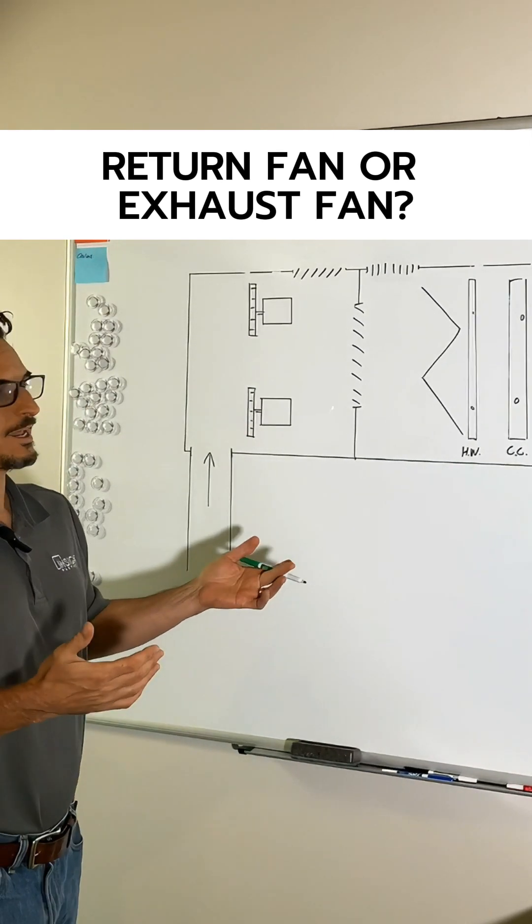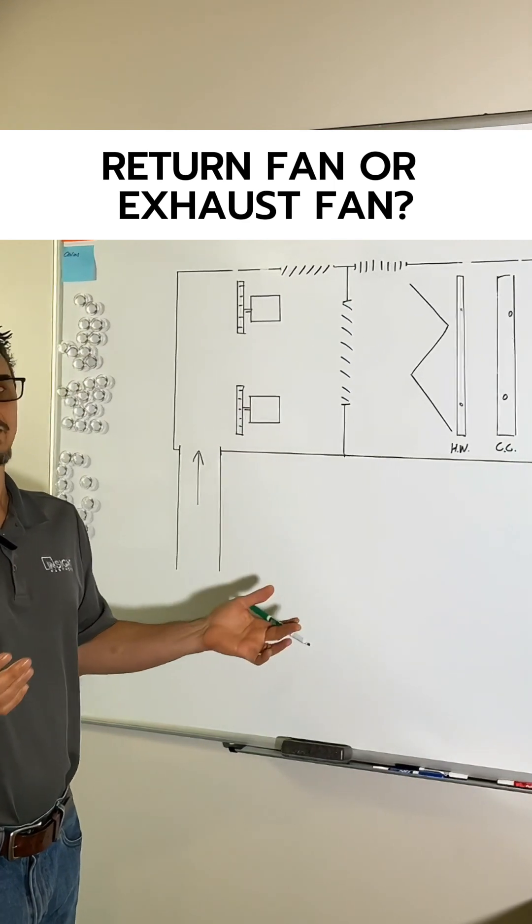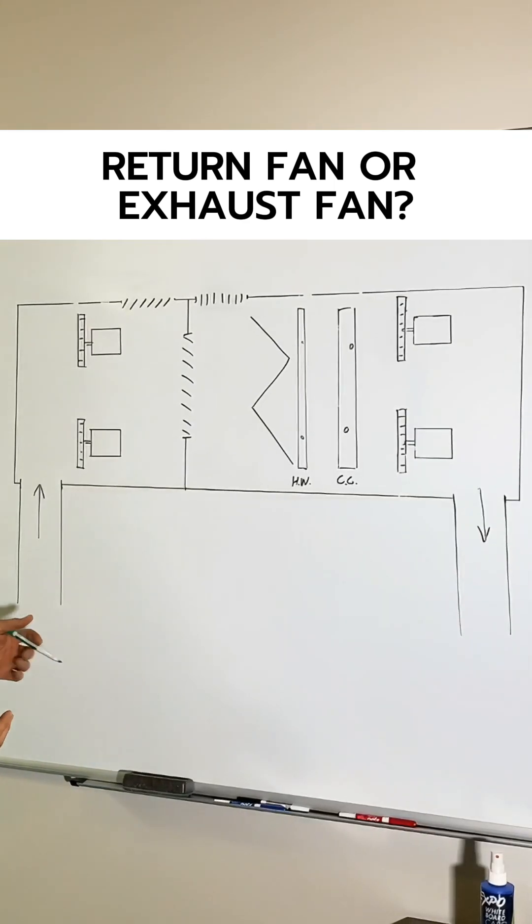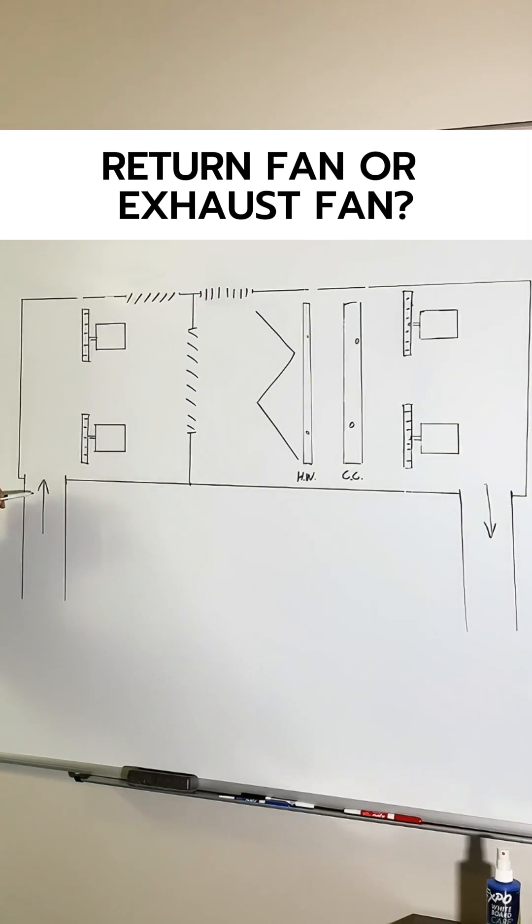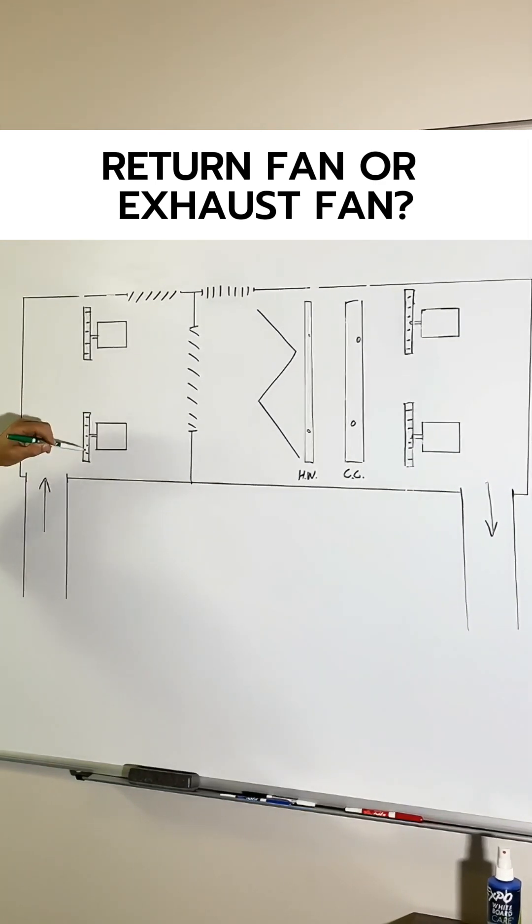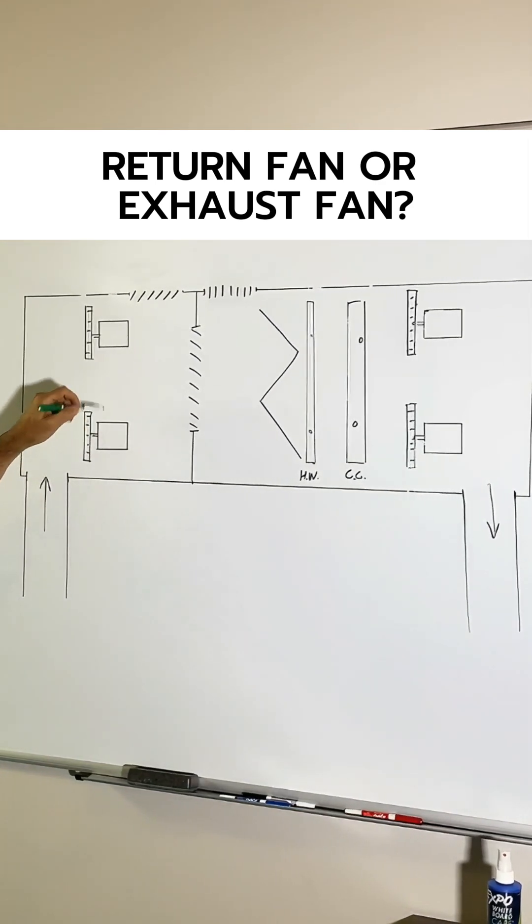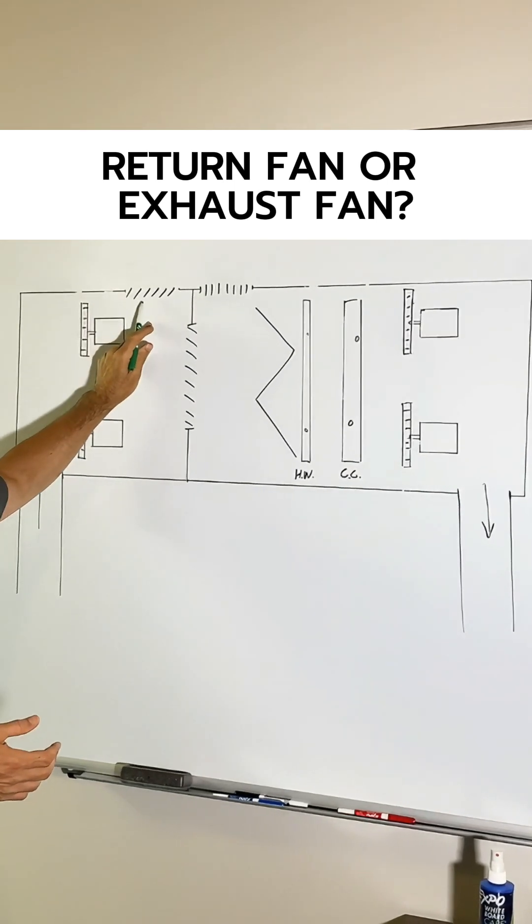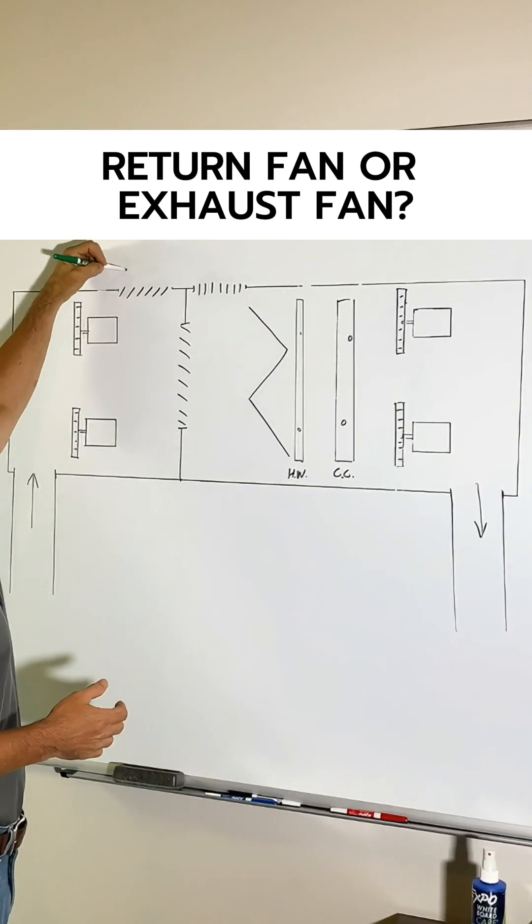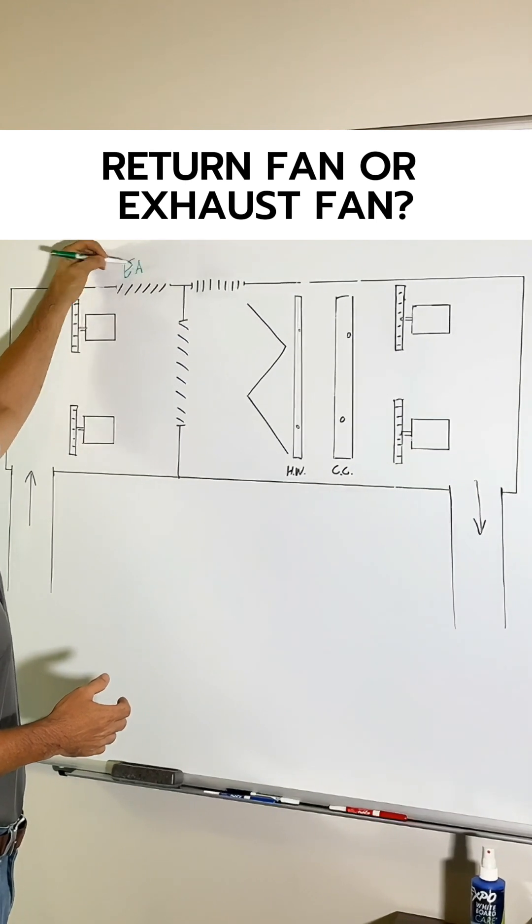So what you're looking at here is a typical return fan chill water air handling unit. Okay, so what you've got is your return duct here. You've got in this case two return fans, your return fan plenum. This would be your exhaust air section. So we'll go ahead and put an exhaust air here.